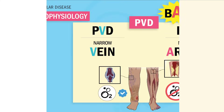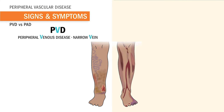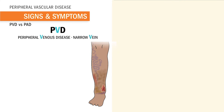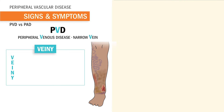Now as far as the signs and symptoms, PVD is the veins, so use the acronym VEINY, like a veiny arm. V is for voluptuous pulses, meaning the blood is being pumped. The arteries are fine, the veins are the problem here, and that's why the legs are warm. So that's a huge test tip right here — we have pulses, meaning oxygen is getting to the extremity.